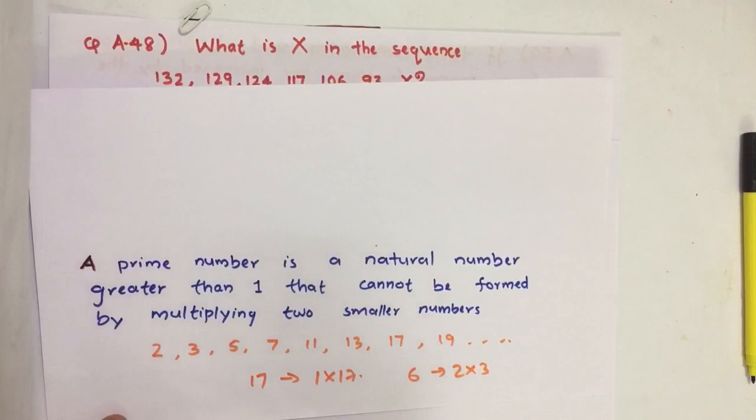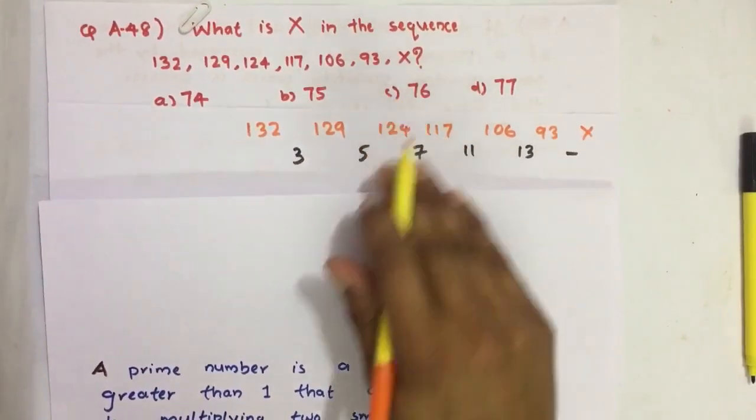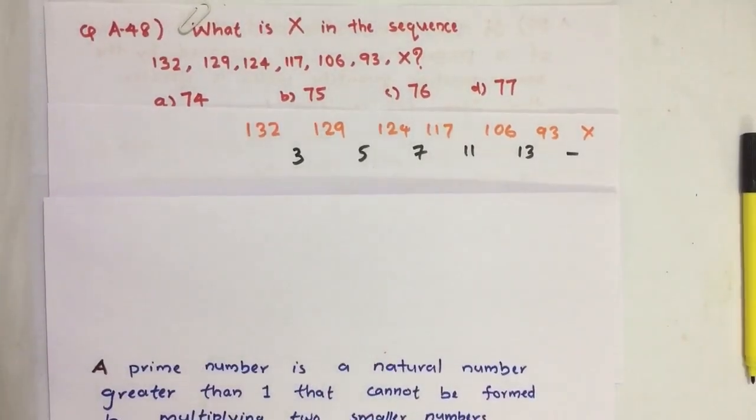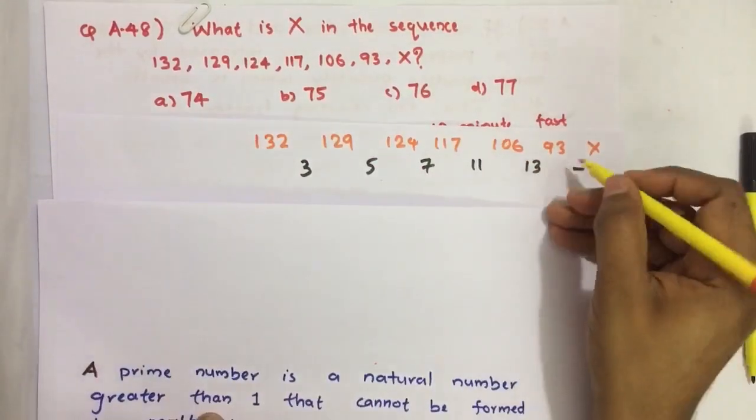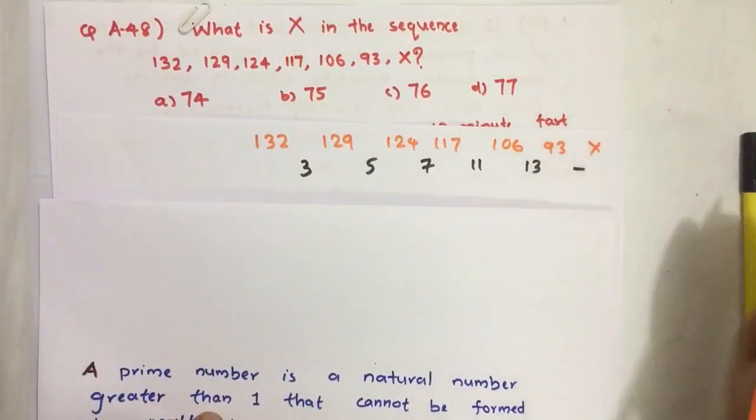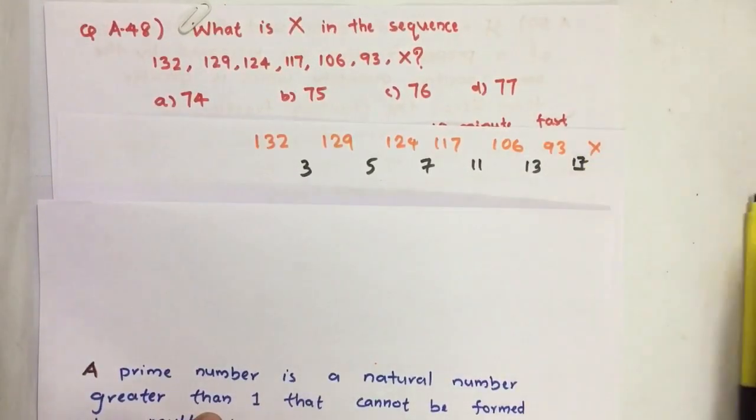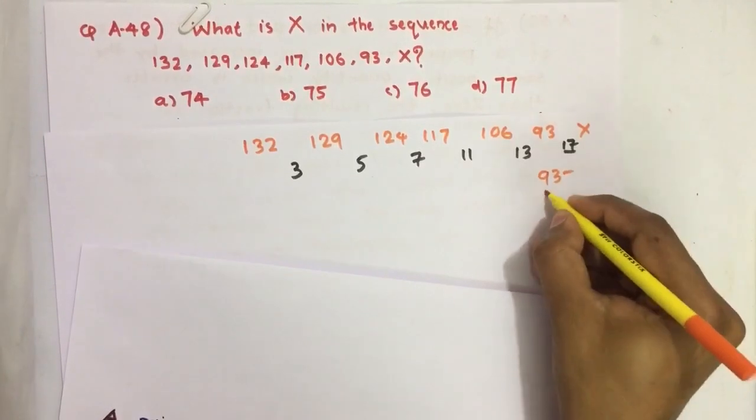So in this prime number series 3, 5, 7, 11, 13, what is the next number? The next number is 17. So we subtract 17 from this 93. We get 93 minus 17.